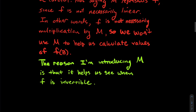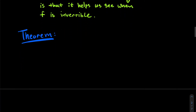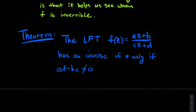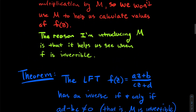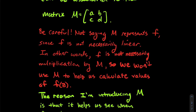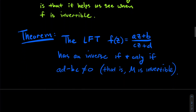So if I'm not going to use M to compute anything, why introduce it? Because it helps us see when a linear fractional transformation is invertible. Here's the theorem: the LFT f(z) = (az + b)/(cz + d) has an inverse if and only if ad - bc ≠ 0 — in other words, if and only if the associated matrix M with entries a, b, c, d is invertible.